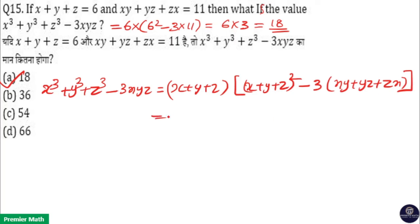Here, x plus y plus z is equal to 6, so we have 6 into x plus y plus z the whole square, that is 6 square, minus 3 into xy plus yz plus zx is equal to 11. So 3 into 11, which equals 6 into 3, is 18.